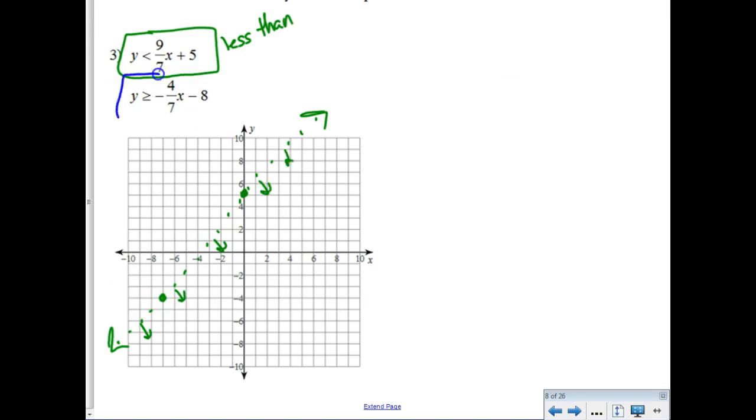Alright, the other line starts at negative 8. And then normally for a slope of negative 4/7ths, I'd move down 4 right 7, but I'm going to fall off. So let's go up 4 and left 7. This line, this time it's a solid line. Oh boy. Because it's got an inequality with an equal to bar on it.